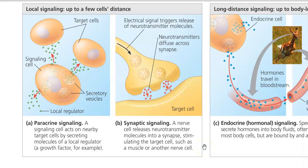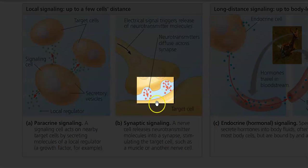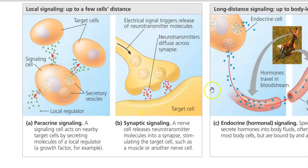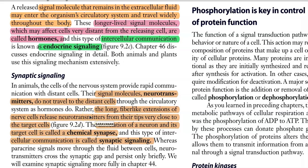In synaptic signaling, a nerve cell releases neurotransmitter molecules into a synapse, which in turn stimulate a target cell such as a muscle cell or another nerve cell. The neurotransmitters diffuse across the synapse and activate the nearby target cell. The signal molecules — mainly neurotransmitters — do not travel long distances, but long fiber-like extensions of nerve cells release neurotransmitters from their tips very close to the target cell at what is called a chemical synapse. Neurotransmitters cross the synaptic gap and persist only for a brief time.